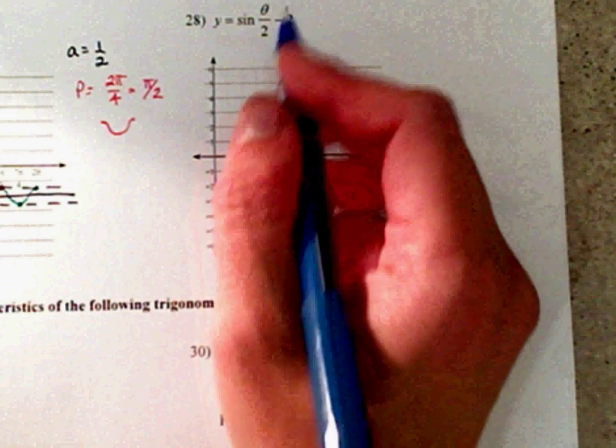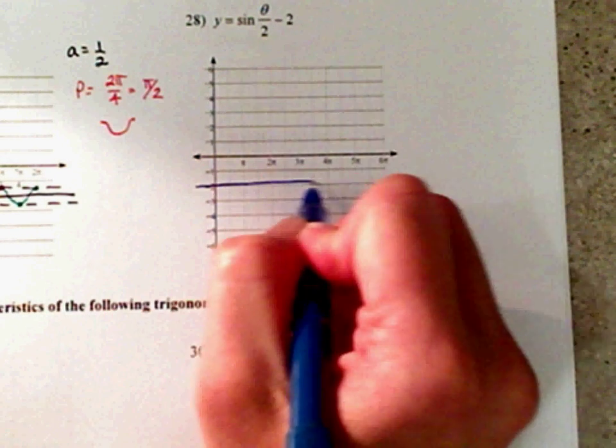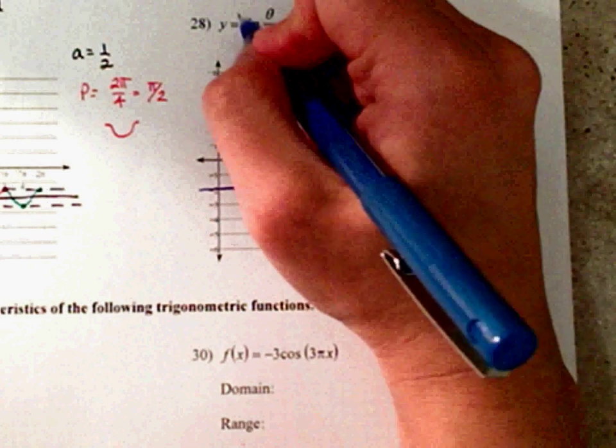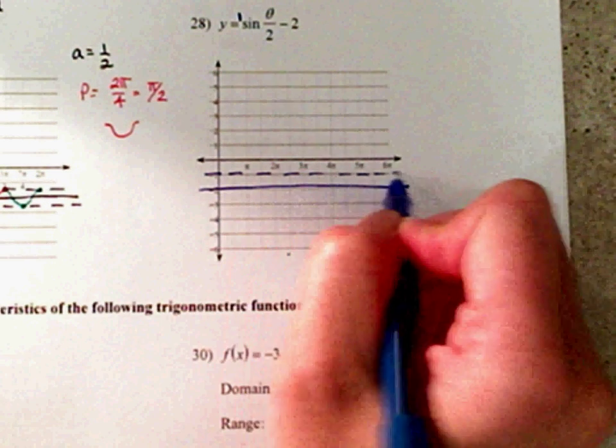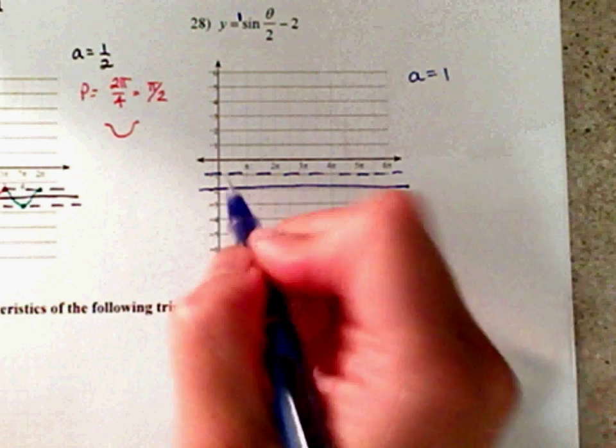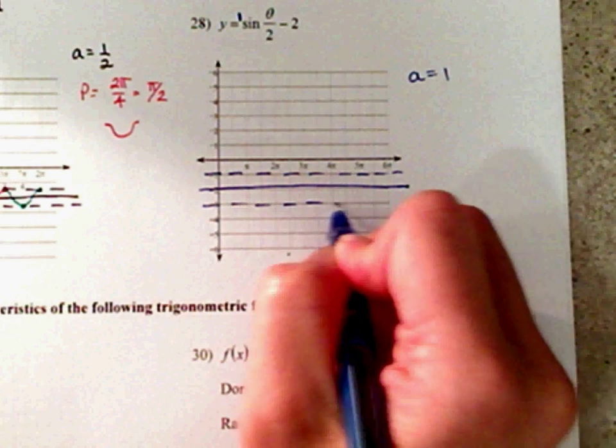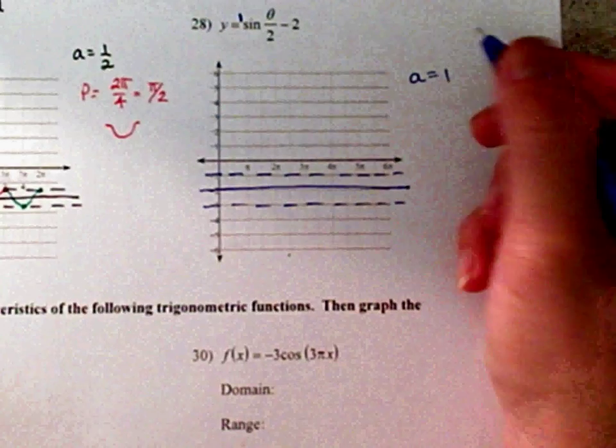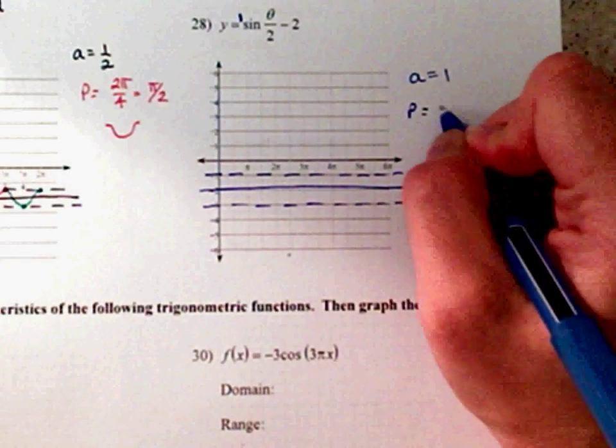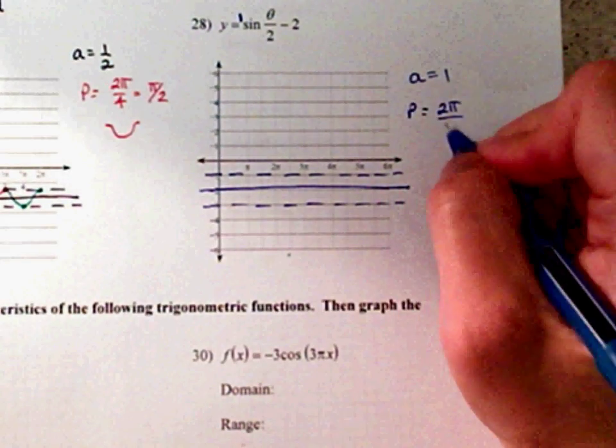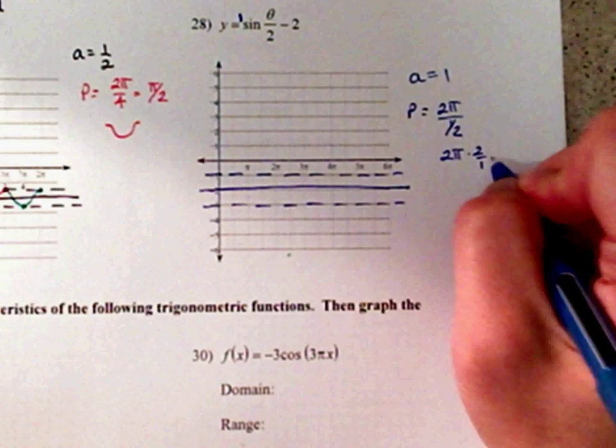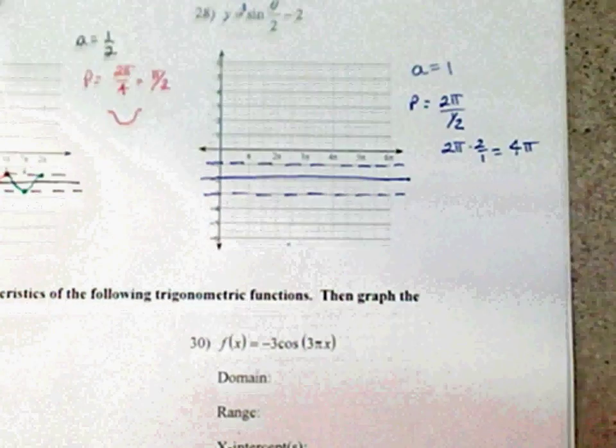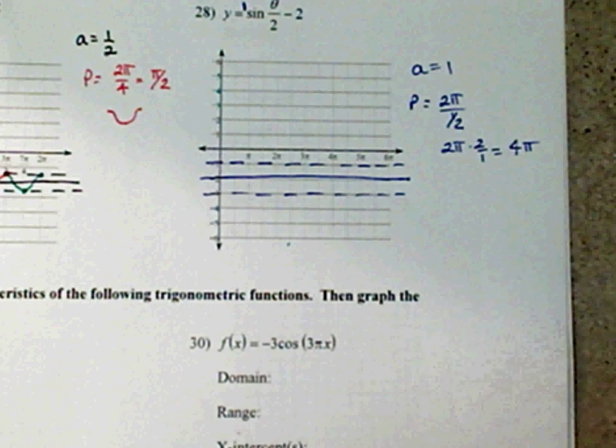Number 28, your midline is at 2. There's a 1 here. And your amplitude is at 1. Things that you always do first. Your period is in pi, so I'm going to take 2 pi over 1 half, which is the same thing as 2 pi times 2 over 1, which is 4 pi. There you go. So there's your period.